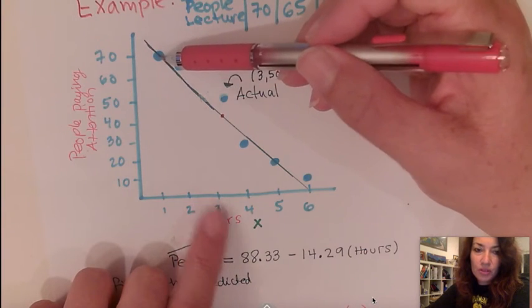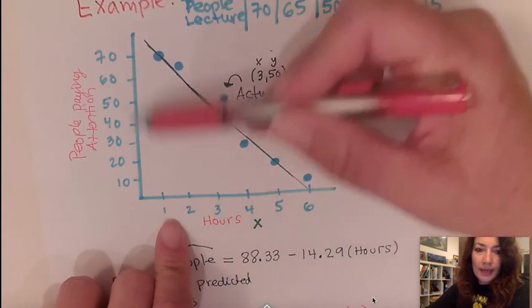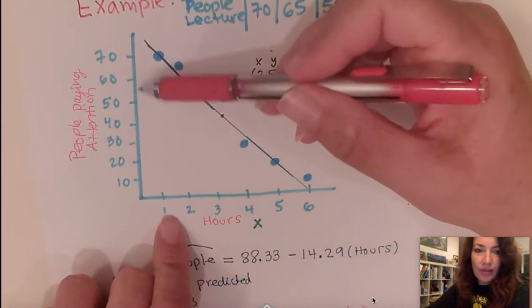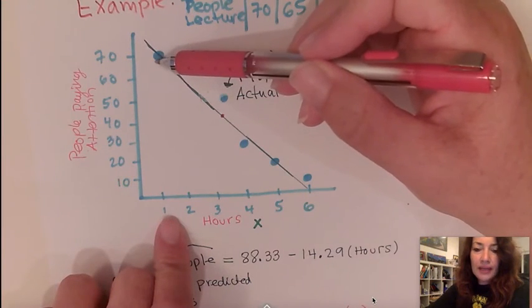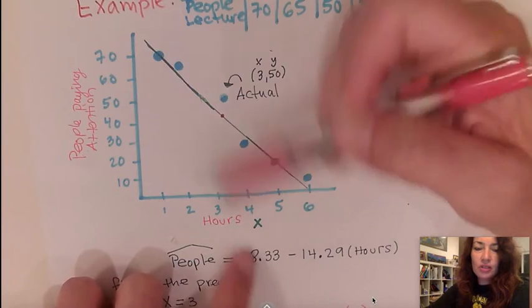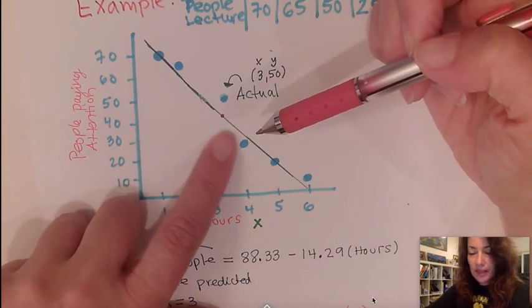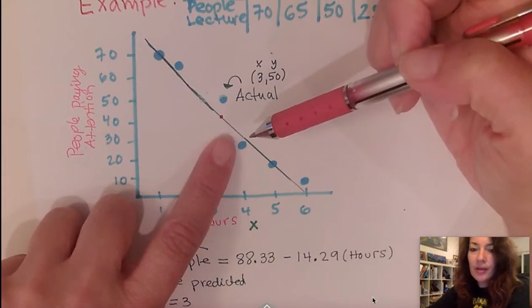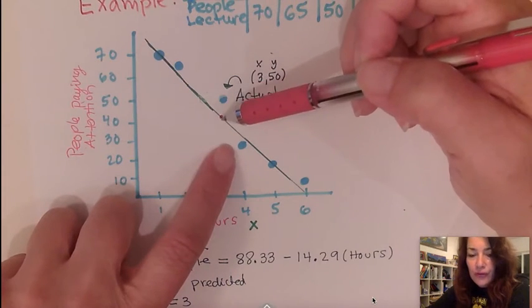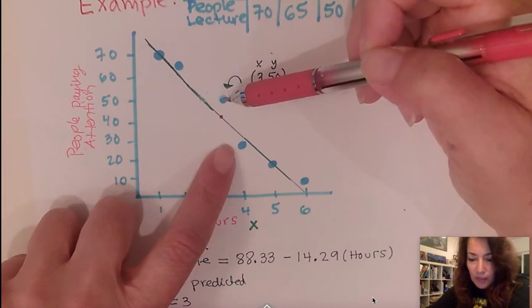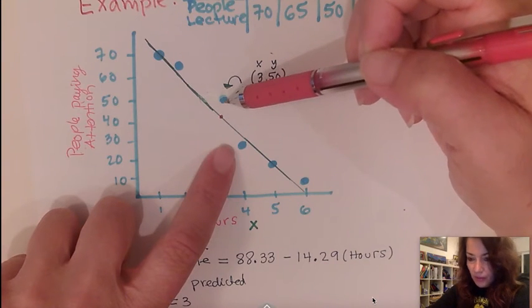So for example, this point at one, when the hour is one, there will be 70 people. If you plug in one, you should get very close to 70. Now this was just a sketch. So it's not very accurate, but the further away your point is from your best fit line, the bigger the residual is.